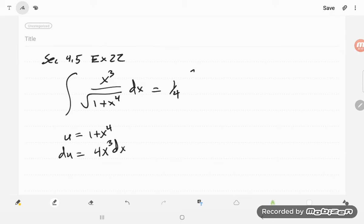so I will force it to have a 4, 4x cubed dx over, and we have 1 plus x to the fourth under the square root sign,